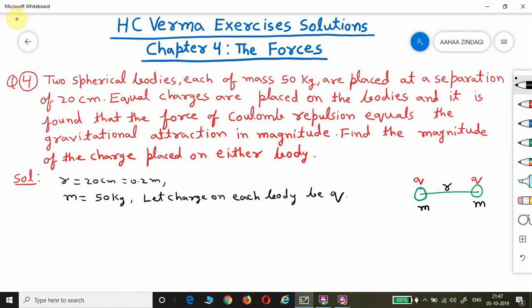The gravitational force of attraction will be equal to coulomb repulsion force. So let's find both forces. First the gravitational force: if we denote it as Fg, then Fg equals Gm² divided by r².